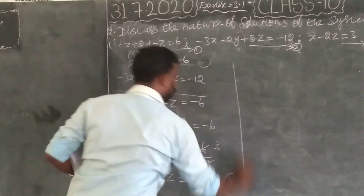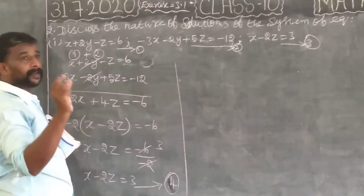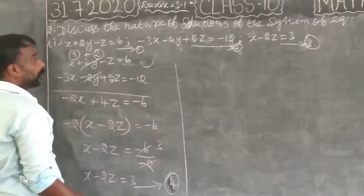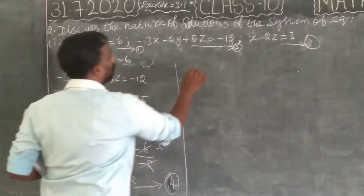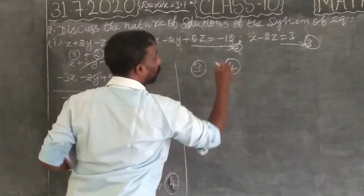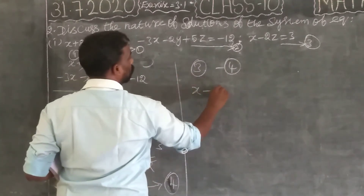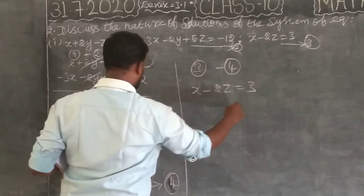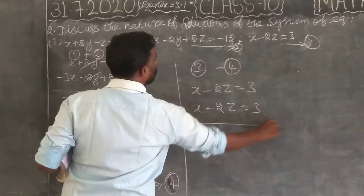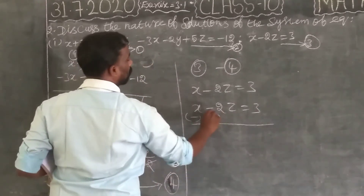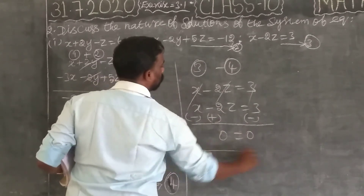That gives us x minus 2z equal to 3, which is the fourth equation. Next, using the fourth equation and the third equation together to eliminate variables.